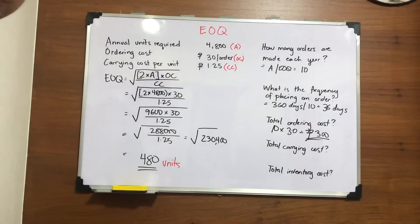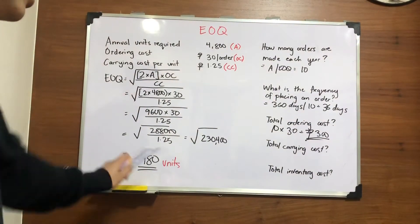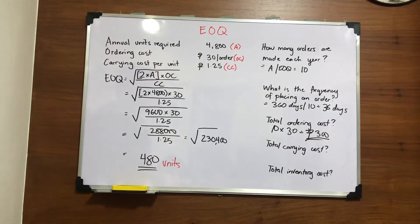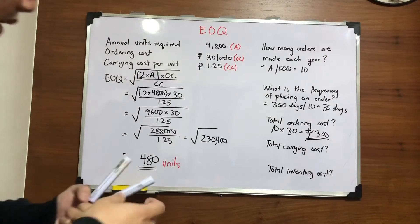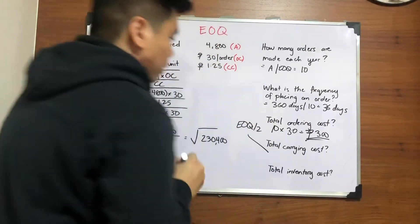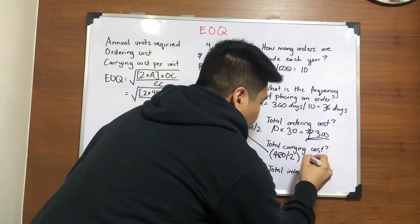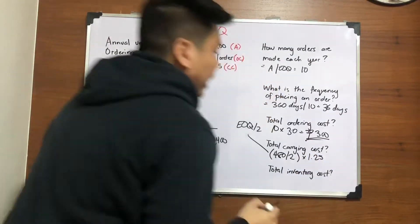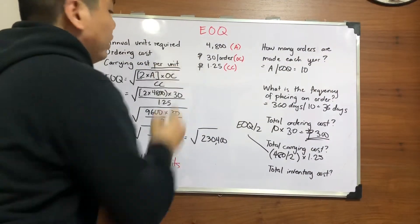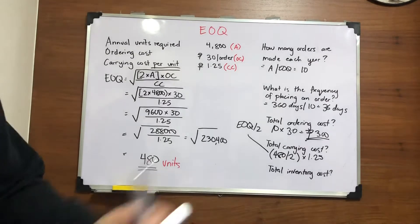For your total carrying costs, the formula is your average inventory multiplied by your carrying cost per unit. To get your average inventory, you divide your EOQ by 2. So 480 divided by 2 is 240, times 1.25 carrying cost per unit. The answer is 240 times 1.25 — you will get 300 pesos as well.